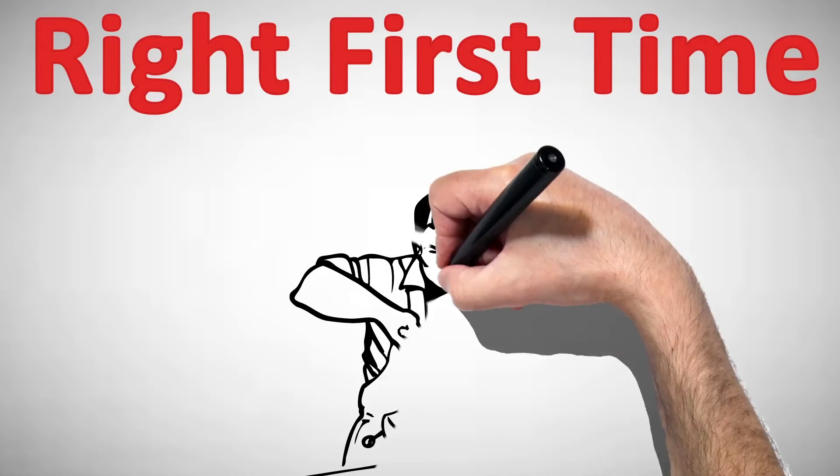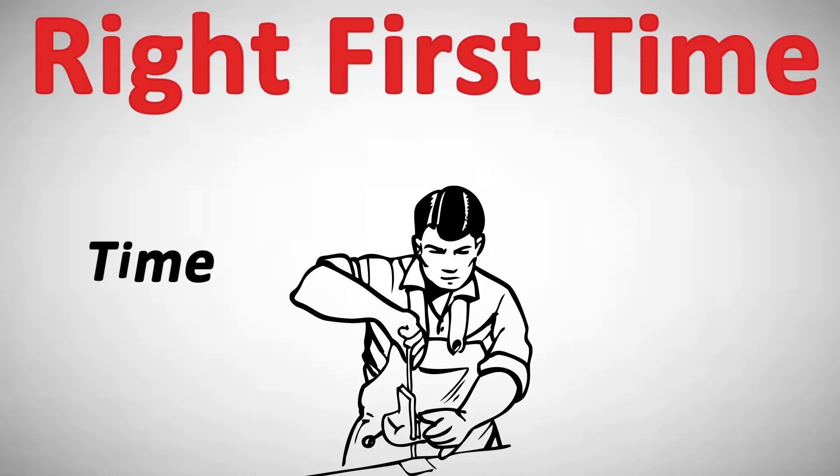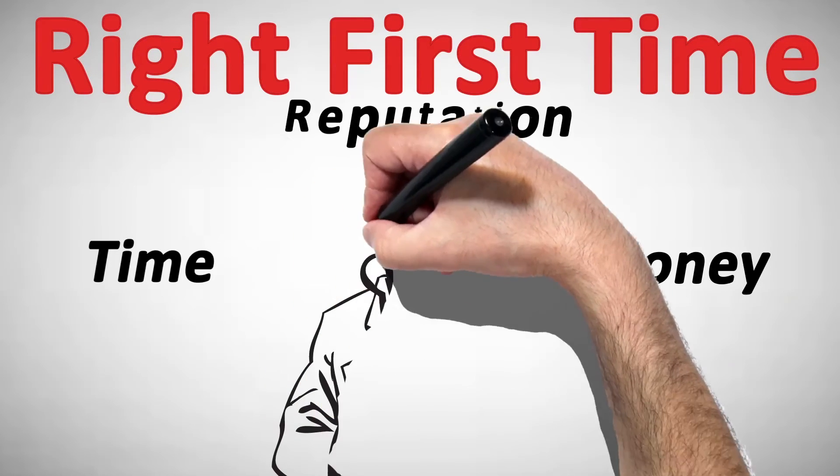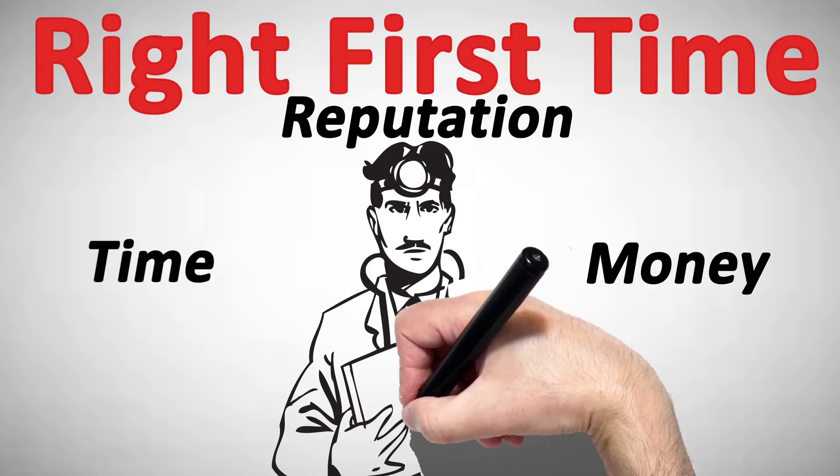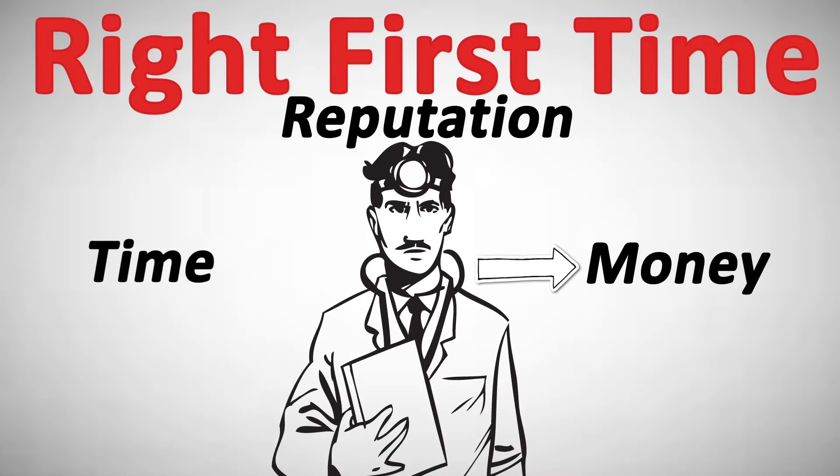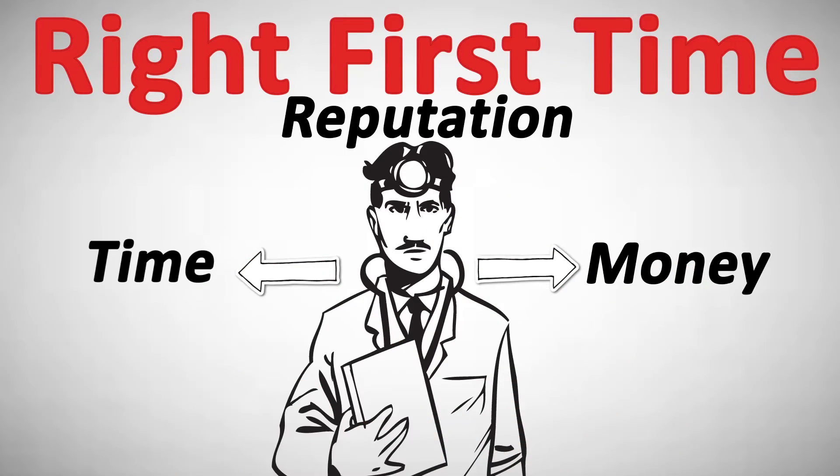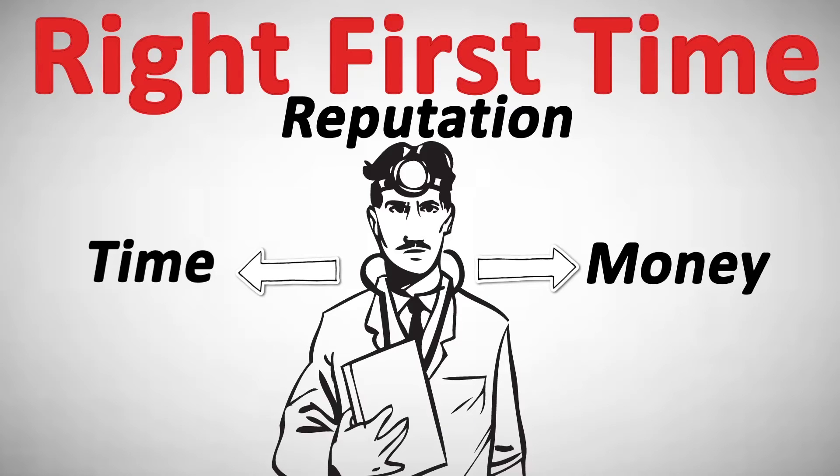Spending the time to do something right avoids the need to do it twice. This not only saves money in the end, but the more times we have to do something, the greater the danger of someone getting hurt. Right First Time keeps people safe as well as saves money, reputation, and time. Why work extra when we don't have to?